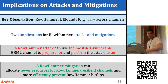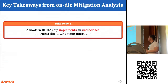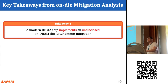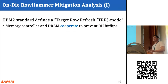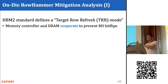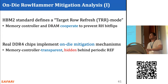Now I'll describe our second analysis on on-die DRAM mitigation mechanisms. Two key takeaways: first, the chip implements an undisclosed on-die mitigation technique resembling what prior work found in real DDR4 chips. The HBM2 standard defines a Target Row Refresh mode where the memory controller and HBM chip collaborate to prevent rowhammer bit flips. We also know that real DDR4 chips implement undisclosed memory-controller-transparent on-die mitigation mechanisms that take actions hidden behind the latency of a real refresh operation.